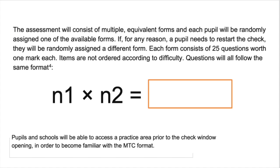The assessment consists of 25 questions worth one mark each. Items are not ordered according to difficulty. Questions will all follow the same format — the example shown on the screen represents a number multiplied by another number. Pupils will be able to access a practice area prior to the check window opening in order to become familiar with the MTC format.